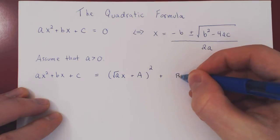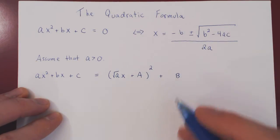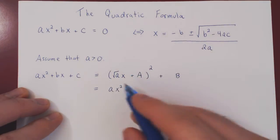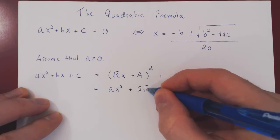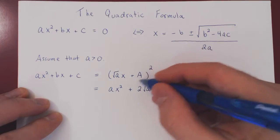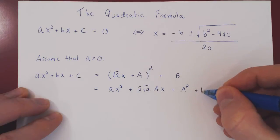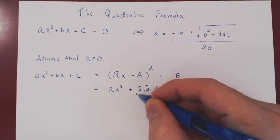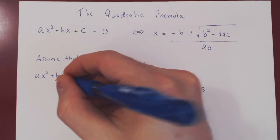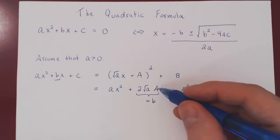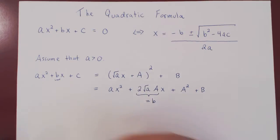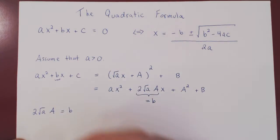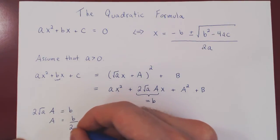And then the leftover constant, plus uppercase B. Let's expand to figure out the values of A and B. If we multiply out, we get root of a times x times itself — so ax squared — plus twice of root of a times A, giving 2 root of a times A times x, plus A squared, plus B. Comparing with the original, the coefficient of x must match: so 2 root of a times A equals b. Solving for uppercase A gives us b over 2 times the square root of a.